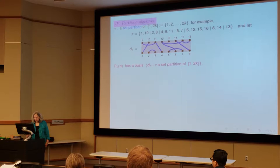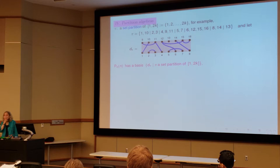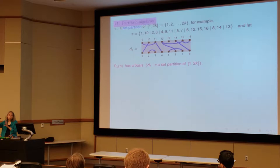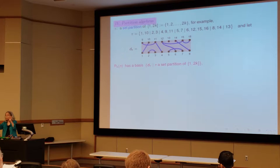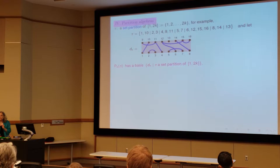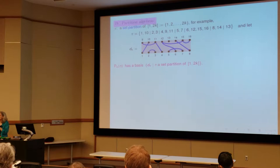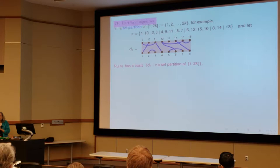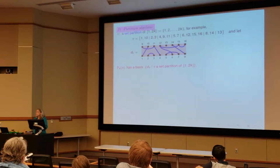So the partition algebra has a basis of these diagrams. And you remember in our tower of algebras that the partition algebra contained the Brauer algebra. Those are the diagrams that exactly have each node connected to one other node. So it's an exact matching. And they can match horizontally or vertically. The symmetric group algebra has a basis of the diagrams that are just vertical connection. One node on the bottom is connected to exactly one node on top. So these diagrams contain Brauer algebra and symmetric group.